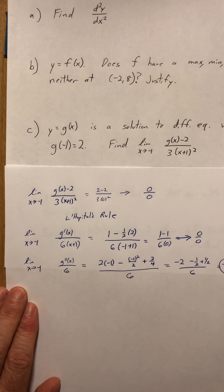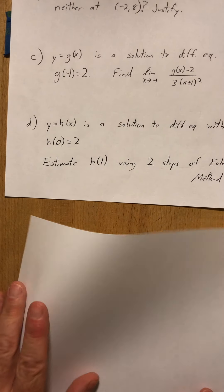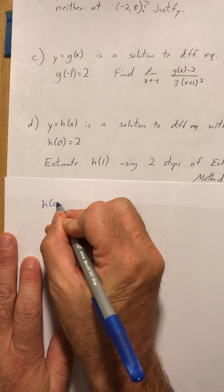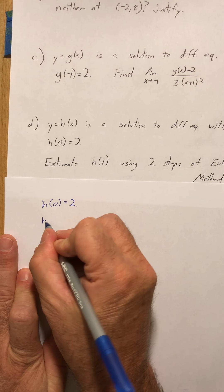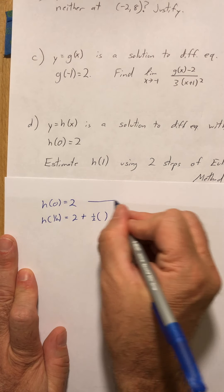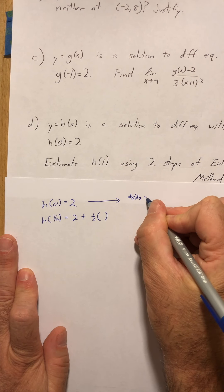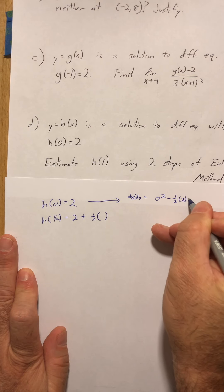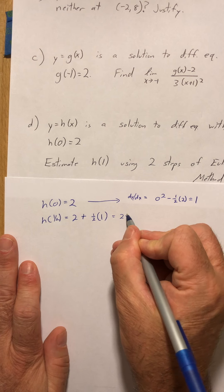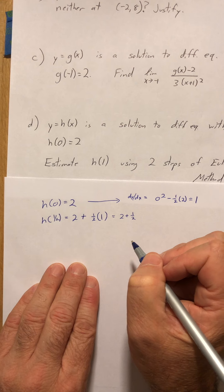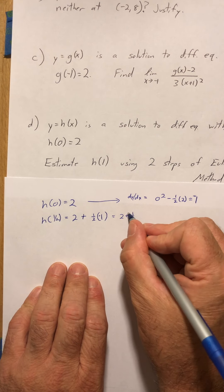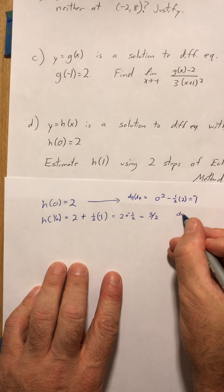Part d: H is the solution to the differential equation with H of 0 equals 2. We need to find H of 1 using two steps of Euler's method. I find H of 1 half by doing 2 plus step size of 1 half times my slope. At the point 0, 2, dy/dx is 0 squared minus 1 half times 2, which is negative 1. So it's 2 minus 1 half, giving 3 halves.